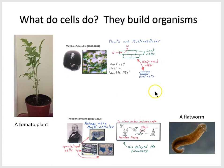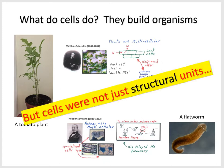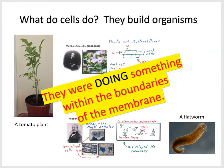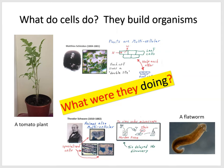So again, at this stage, what do cells do? They build organisms. Plant cells build the plant; animal cells build the body of the animal. But cells were not just structural units — they were doing something within the boundaries of the membrane. What were they doing? That's the question we'll try to answer in the next lesson.